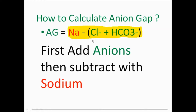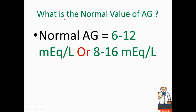This is the formula. The normal value of anion gap is 6 to 12 or 8 to 16. You can remember both, but for the exam — like USMLE — focus on 6 to 12.